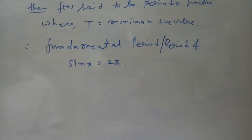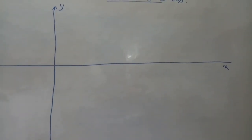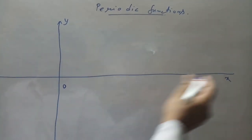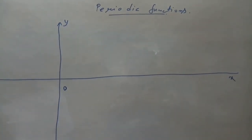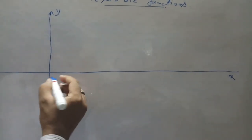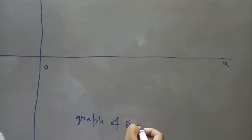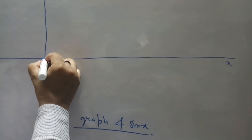Now, how can you determine this period from the graph? We have the y-axis and the x-axis. Now, we have learned from the graph how we can find the period of sin x. What is the graph of sin x?